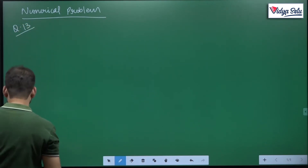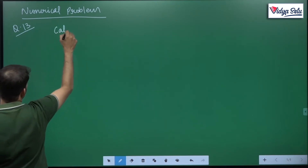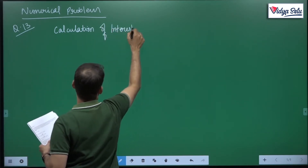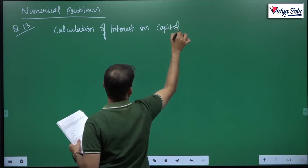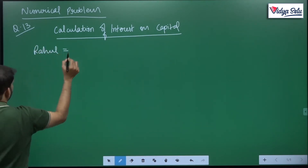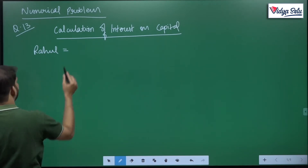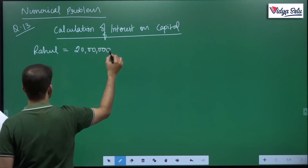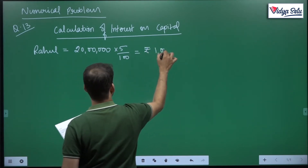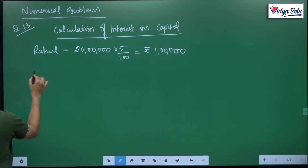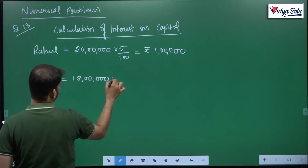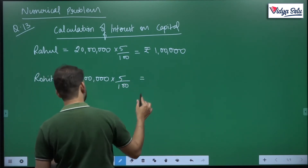Question 13 - we just have to calculate interest on capital. So, calculation of interest on capital: first, Rahul had 20 lakh multiplied by 5 percent, so we get our answer as rupees 1 lakh. Next, Rohit who has 18 lakhs multiplied by 5 percent, that gives us rupees 90,000.